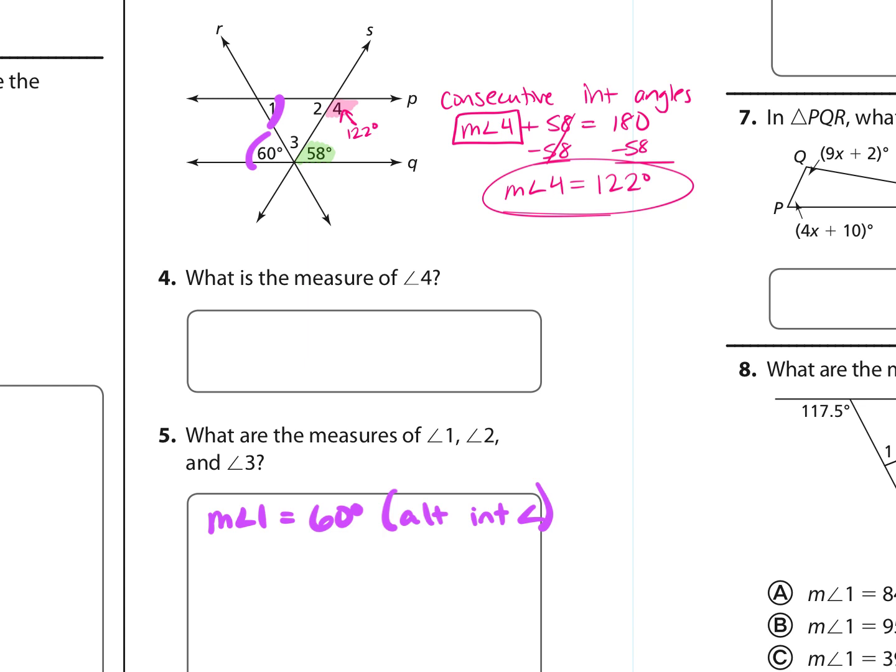Angle 2 and 58, they are congruent because, once again, they are alternate interior angles.